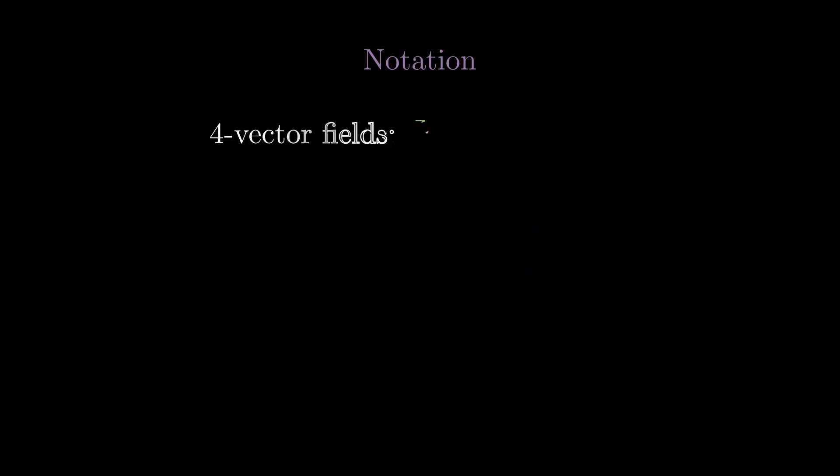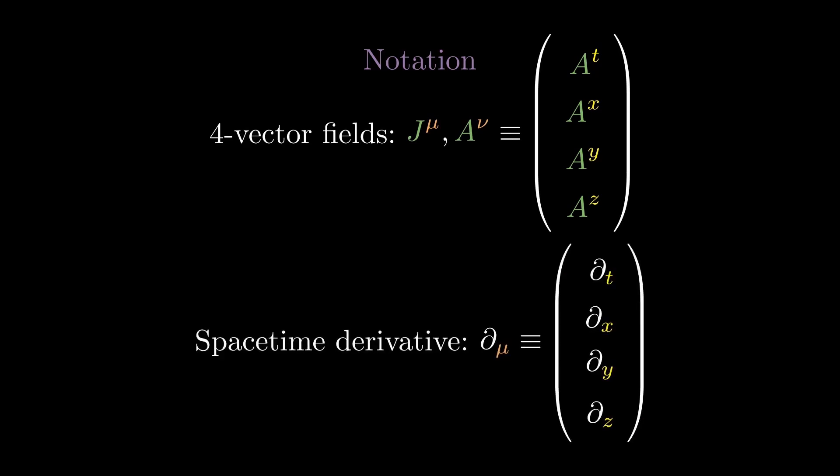Once we want to incorporate special relativity into our theory, we will have to weave space and time together. 4D vector, or 4-vector fields, will have 4 components: 1 in time, then 3 in space. To distinguish them from 3D vectors, they are not bolded and instead will be tagged with Greek letters such as mu, nu, rho, and sigma in the subscript or superscript position. Do not confuse them with exponents. There are no exponents in this video. We can also generalize the gradient operator to include a partial derivative with respect to time in its time component.